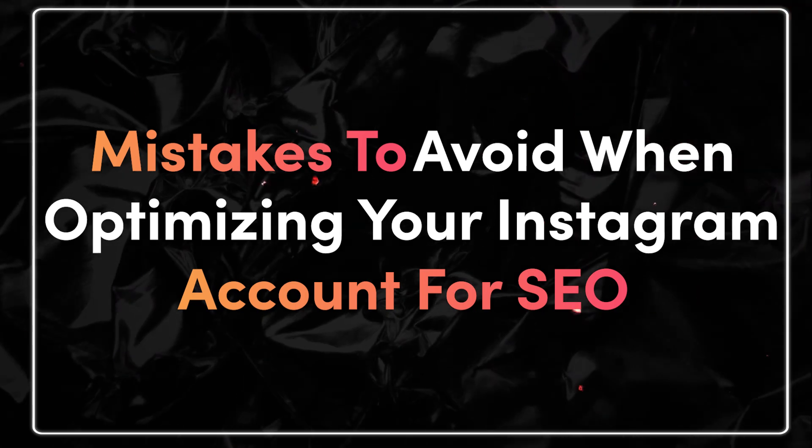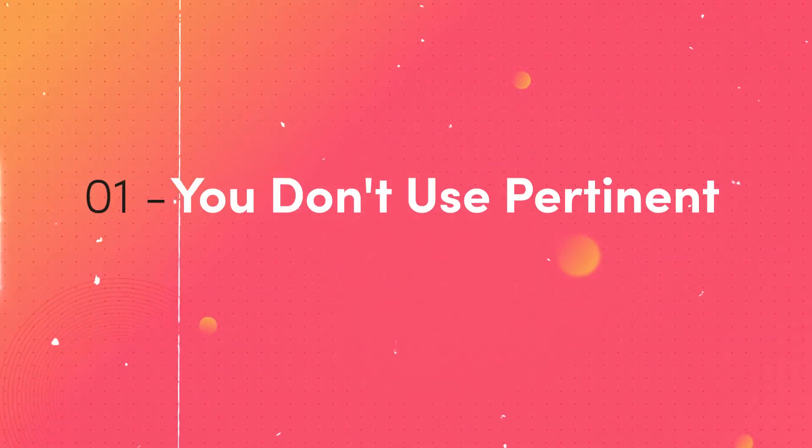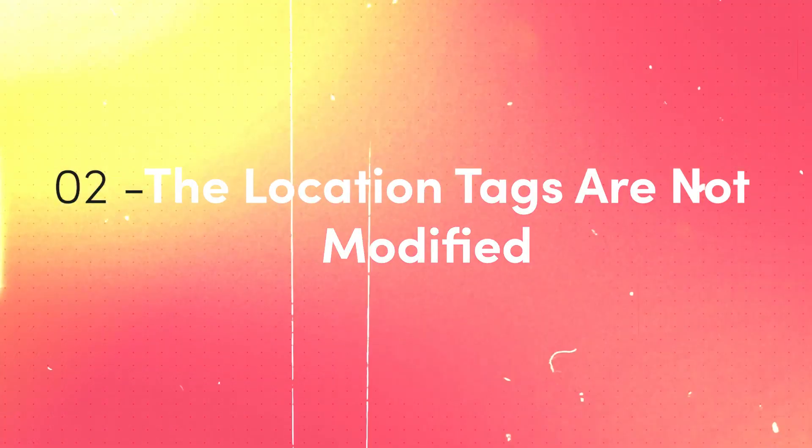Mistakes to avoid when optimizing your Instagram account for SEO: Don't neglect relevant hashtags — using hashtags that are relevant to your post and business is crucial for Instagram optimization. Also, don't forget to modify your location tags. If your work is region-specific, there may not be many location tags available, and the wrong ones will draw in the wrong kind of customers.